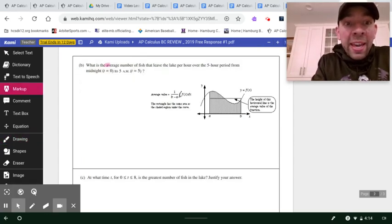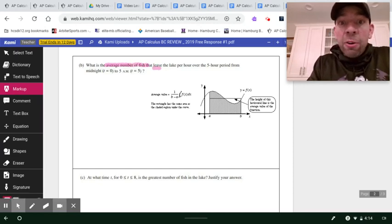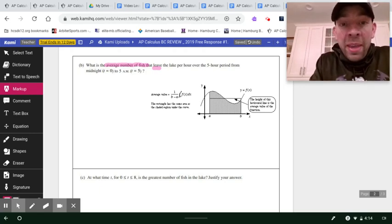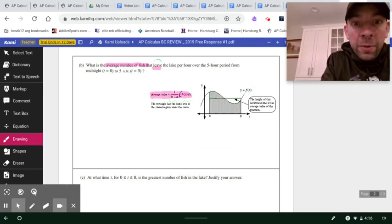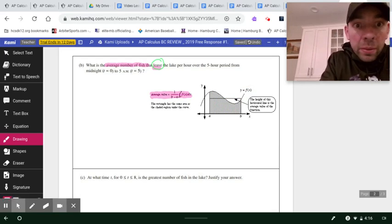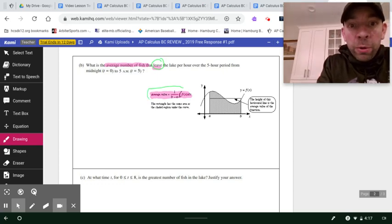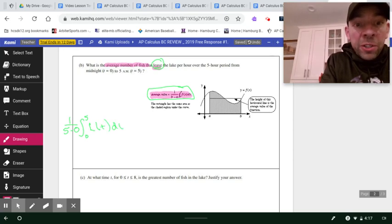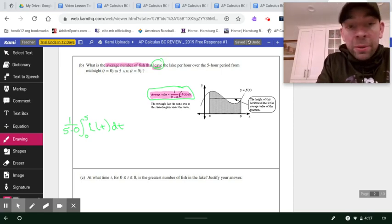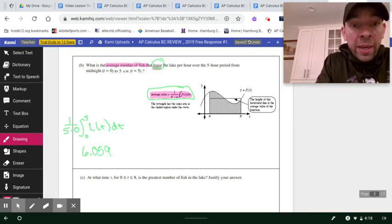Sliding into part B, we want to find the average number of fish that leave the pond over that five-hour period from midnight to 5 a.m. This average value function is a tremendous image rate. If we apply that formula to this particular question, we're going to do 1 over 5 minus 0, integral from 0 to 5. We want fish leaving, so we'll use the L of T function. Fire that into your calculator, and you're going to get about an average of 6.059 fish leaving per hour.